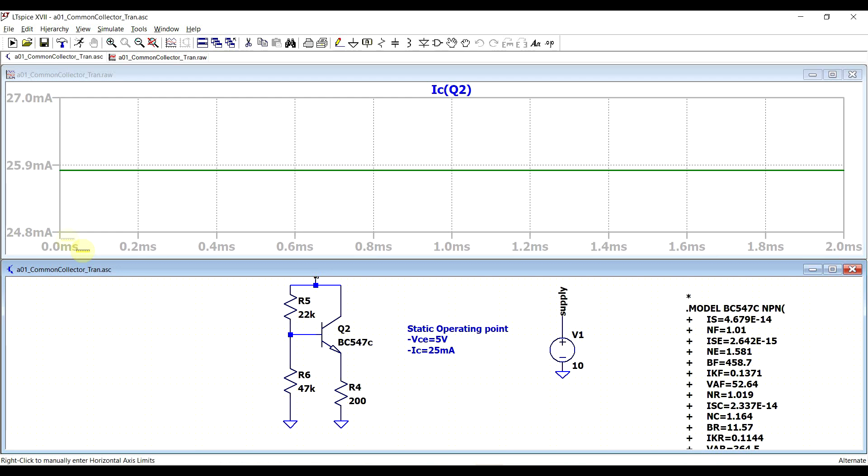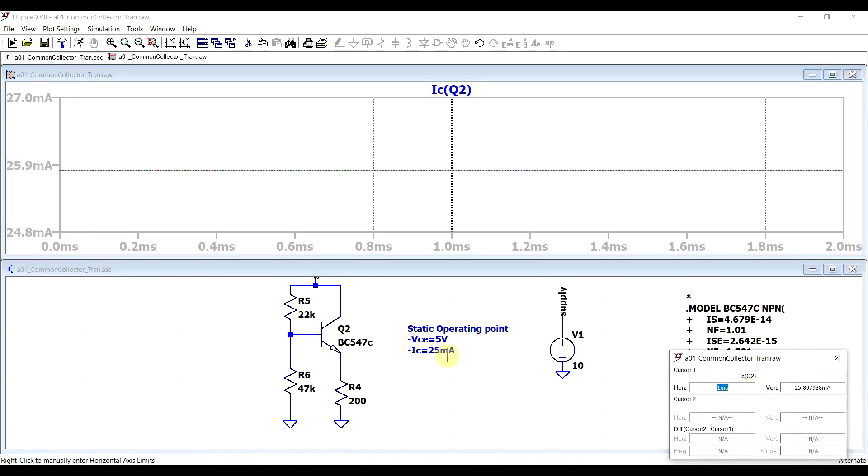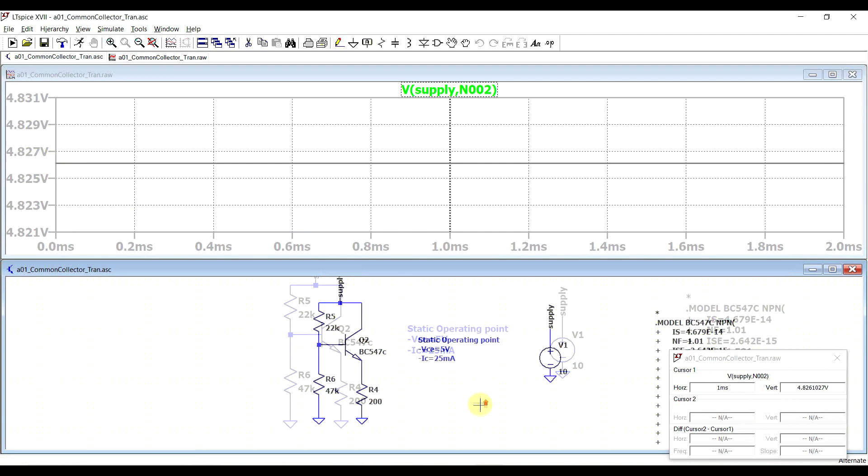So first of all our collector current is about 25.8 milliamps, very close to the 25 we were intending for, and the collector emitter voltage is 4.82 volts. So things are looking good so far.